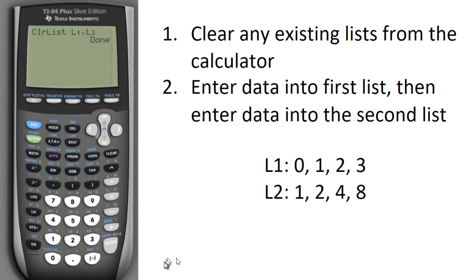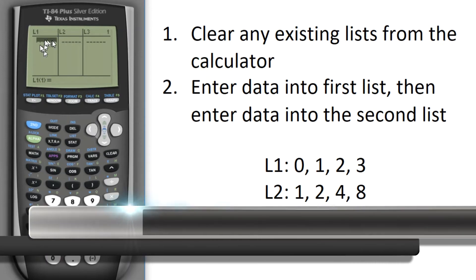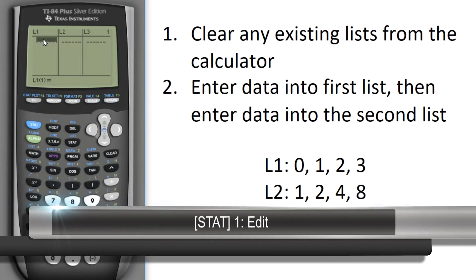Next I'm going to enter the data you see there into list 1 and the data you see into list 2. I'm going to hit the STAT key and choose EDIT, and you can see I have empty lists, so I want to make sure that my cursor, the darkened area there, is in list 1.